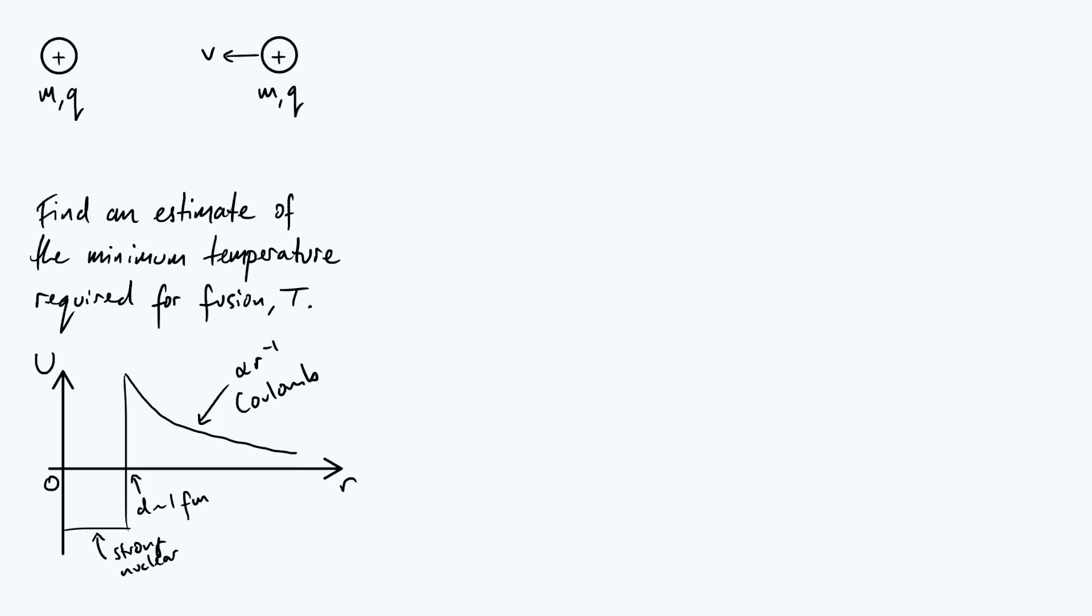Now a sensible thing to do would be to take that velocity as the root mean square velocity of a particle in the Maxwell-Boltzmann distribution. Now technically it should really be the root mean square relative velocity because we're working in the rest frame of one of the nuclei. It can be shown that the root mean square relative velocity is root 2 times the root mean square velocity, but because we're building an approximate model here we're not working to a level of accuracy where a factor of root 2 is going to make a difference. So let's just keep things simple and say that v is the RMS velocity.